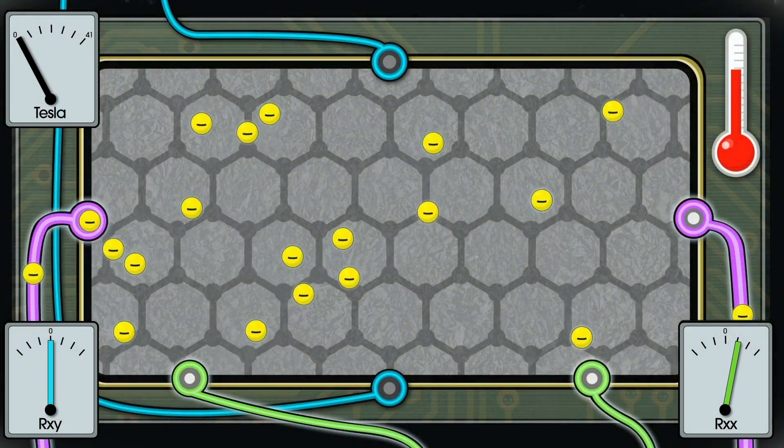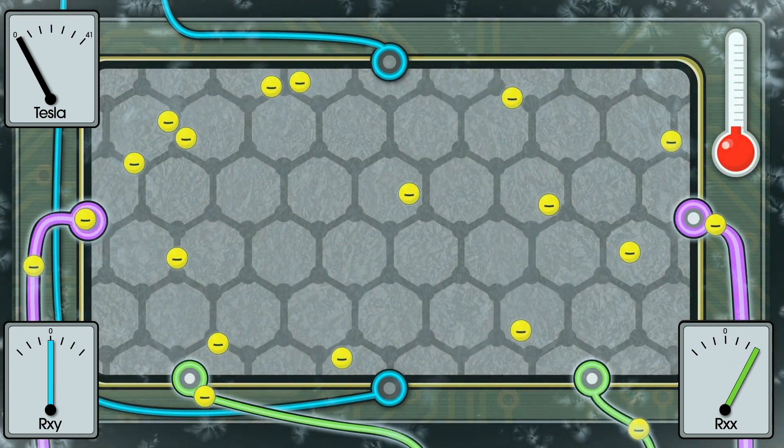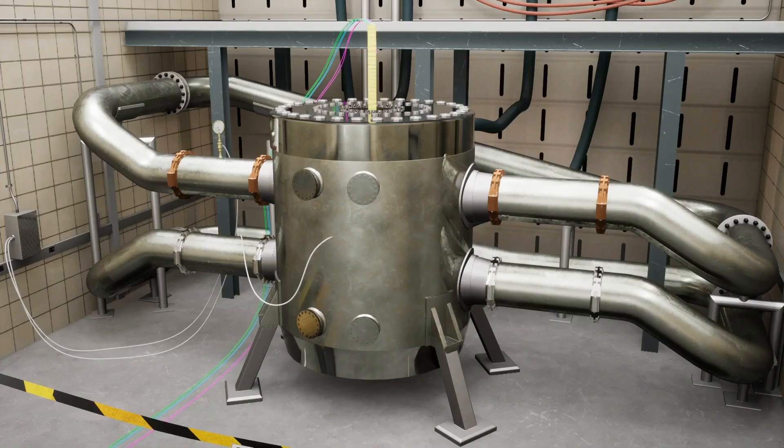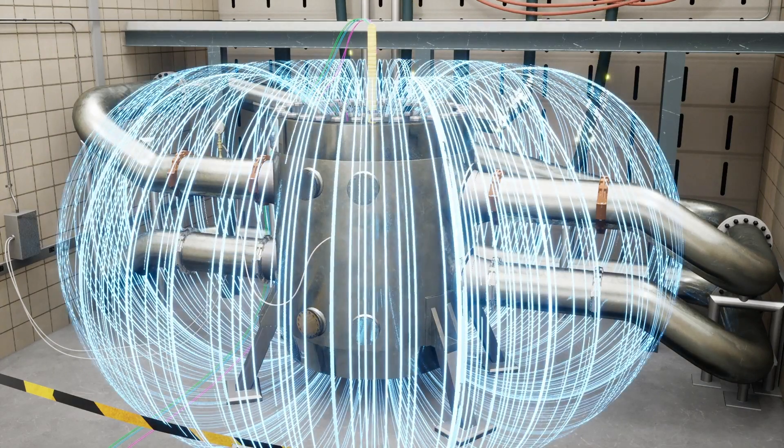For example, when they lowered the temperature, the electrons encountered less resistance. When they turned on the magnet, the field exerted a force on the electrons that affected their path.